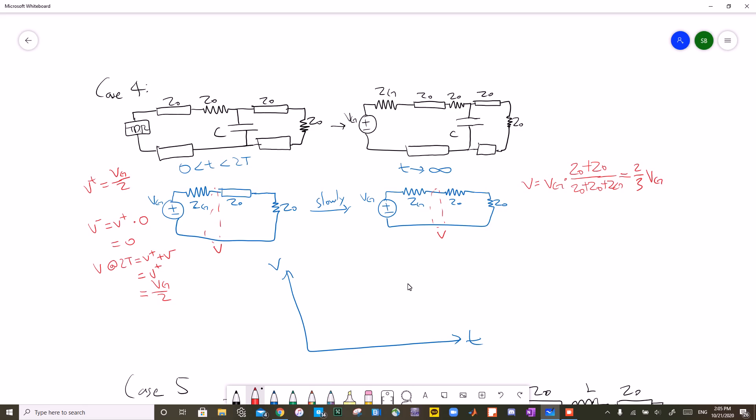However at steady state, the capacitor is open, making the circuit on the right. A simple voltage divider equation will do, making the final voltage 2 over 3 VG. Plotting this, we'll start out at VG over 2, and at 2T, we will start to gradually increase to a level of 2 over 3 VG. There, that's the first graph.